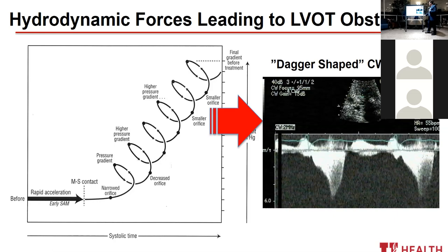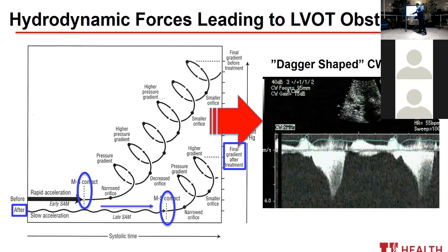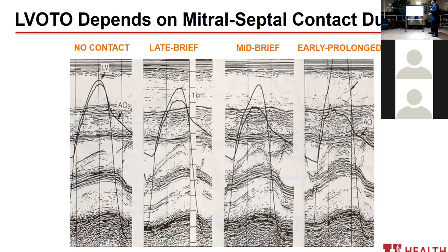This dynamic LVOT obstruction is important because all treatments target slowing down the acceleration. We use beta blockers and calcium channel blockers to slow the acceleration of flow so we can delay septal contact — by delaying that contact, the gradient will be lower. This is illustrated by catheter pressure measurements in the LV and aorta superimposed on an M-mode of the mitral valve: no contact, no gradient; late and brief contact, a little gradient; very early and prolonged contact, a significant gradient.